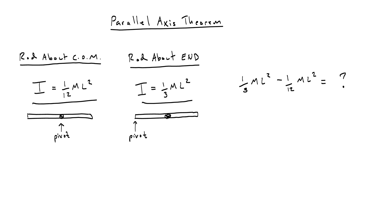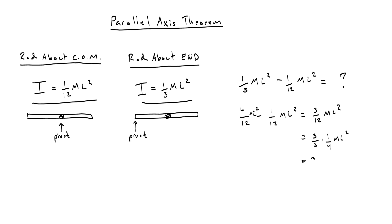To figure out that missing piece, we convert to 12ths: 1/3 is 4/12. Subtracting 1/12 ml² gives us 3/12 ml². Now doing something a little unusual: 3/12 can be written as (3/3) × (1/4), and since 3/3 is just 1, we get 1 × (1/4) ml². Putting the 1/4 inside the square gives us m(l/2)², the whole thing squared.